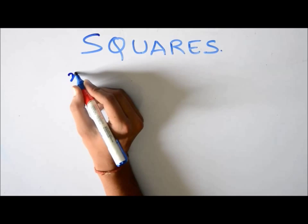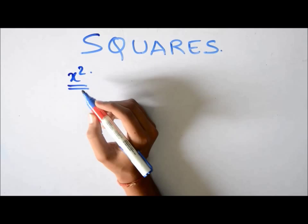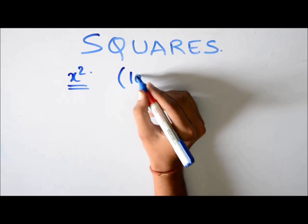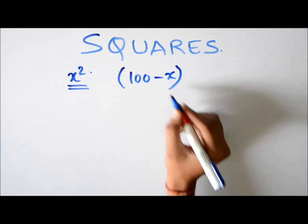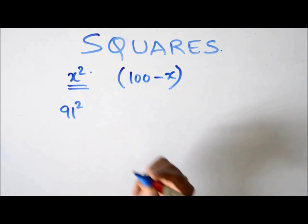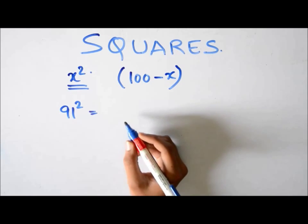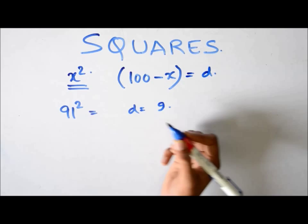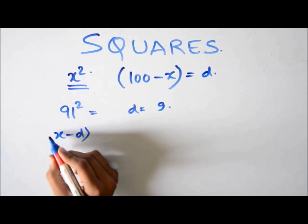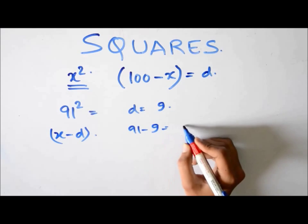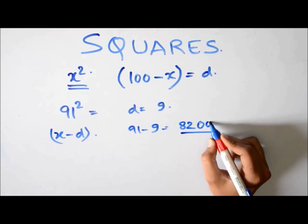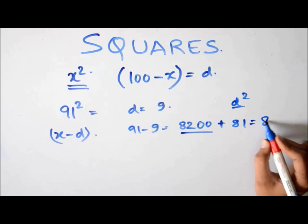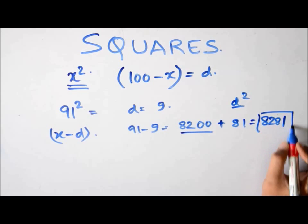Suppose you have to calculate x square. The technique says that if x is close to 100, you find the difference of this number from 100. For example, if you have to calculate 91 square, 100 minus 91 gives difference d equals 9. Then you reduce this d from x. In this case it's 91 minus 9, that is 82. Then you multiply this with 100 and add d square, that is 81. So it will be 8281. Now it's very simple.